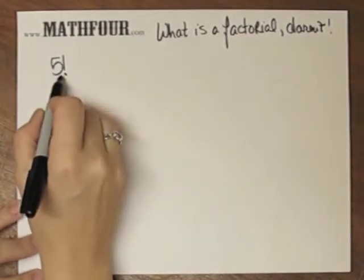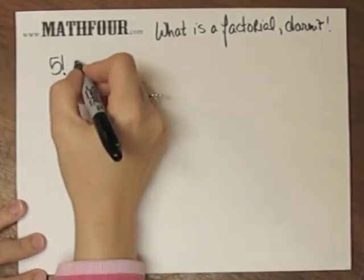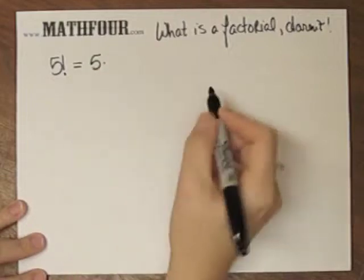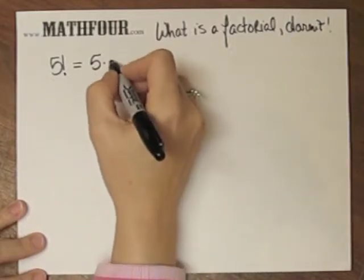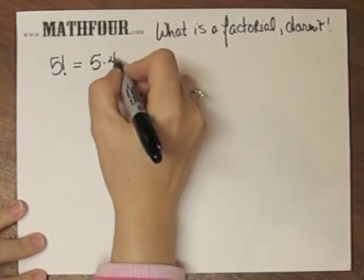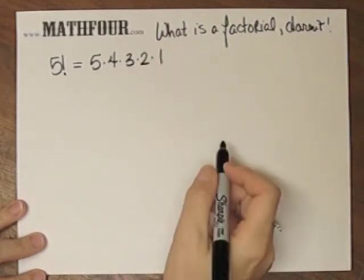So this actually reads 5 factorial and means that you start with 5 and you go down by whole numbers and you multiply them together.